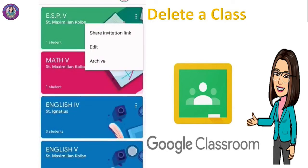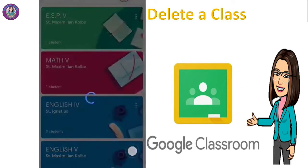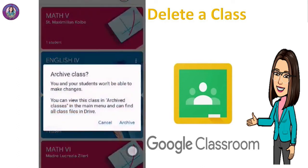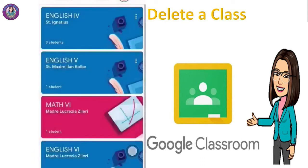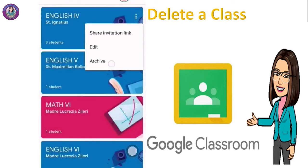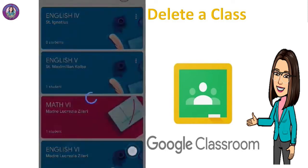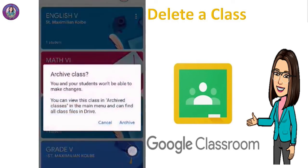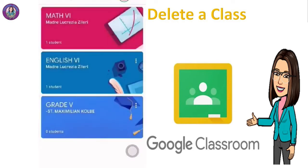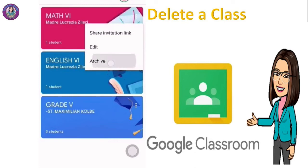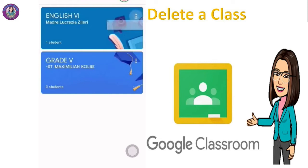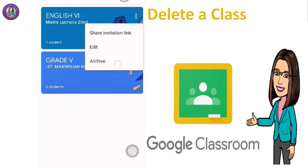We'll do the same thing for the next subjects. Click the three dots on the upper right, click Archive, then click Archive again. Do the same for the remaining classes — click the three dots on the upper right and click Archive.